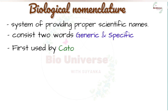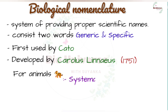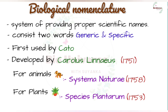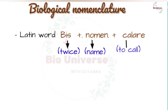Binomial nomenclature for the scientific naming of organisms was developed by Carlos Linnaeus in 1751. All valid names for animals under binomial nomenclature are those given by Linnaeus in the tenth edition of his book Systema Naturae, published in 1758. All valid names for plants are given in his book Species Plantarum, published in 1753. The word binomial is derived from the Latin bis, meaning twice, nomine, meaning name, and calere, meaning to call.